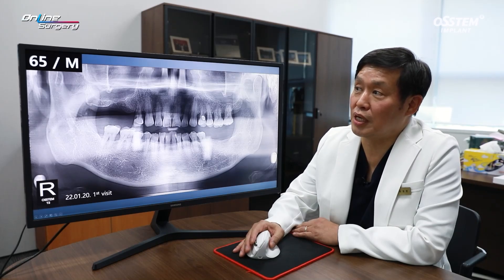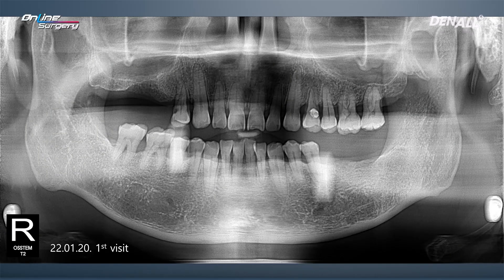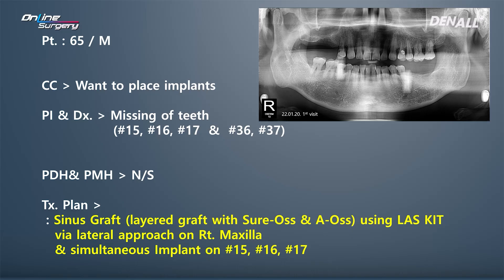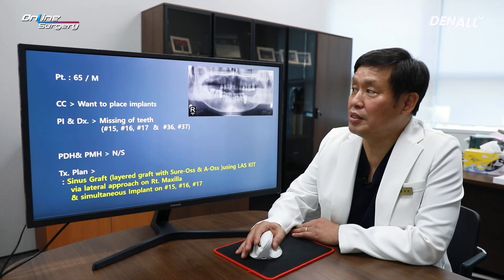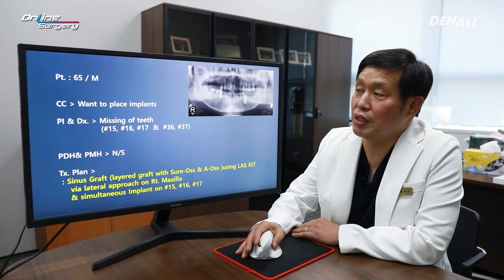Let's take an overview of the case. This is the panoramic image at the initial visit. This is a 65-year-old male patient with missing teeth in the upper right quadrant and lower left quadrant. The chief complaint was missing teeth on both sides. Numbers 15, 16, 17, 36, and 37 are missing.